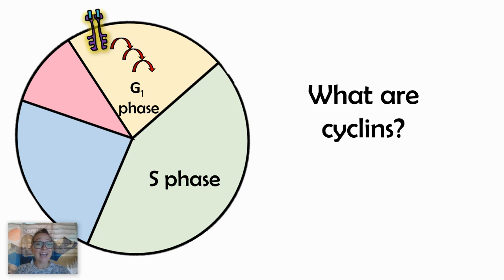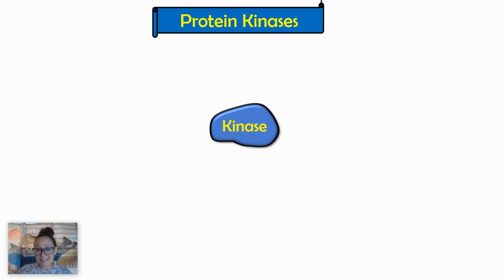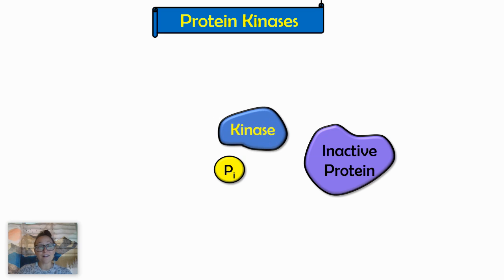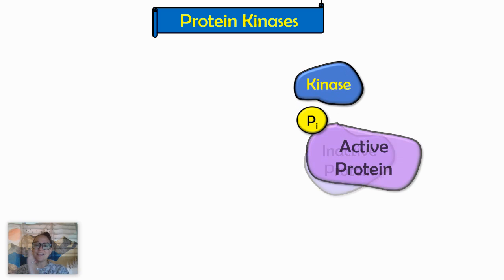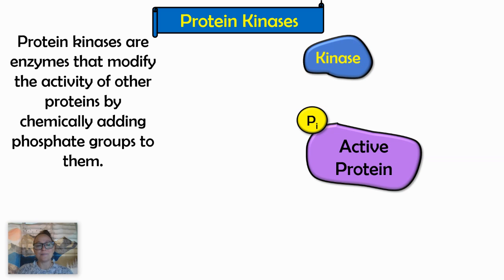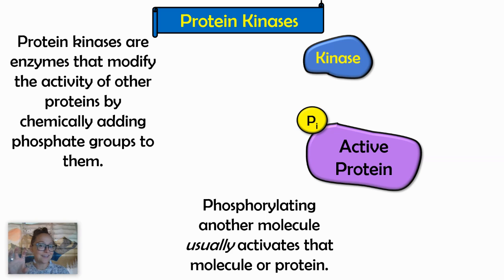Before we can talk about cyclins and how they progress the cell through the cell cycle, we need to review kinases. A kinase is an enzyme, and what kinases generally do is take a phosphate group and phosphorylate other proteins to turn an inactive protein active. They modify other proteins by adding phosphate groups. In these examples, we'll be looking at how phosphorylation activates other proteins.